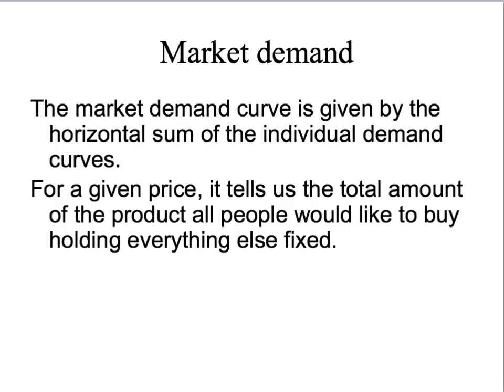Now the market demand curve is simply given by the horizontal sum of the individual demand curves. That may sound complex, but actually it is really, really simple. If you understand what the demand curve is for an individual, the market demand curve is just a very simple extension. The market demand curve tells us: for a given price, the total amount of the product that all people would like to buy, holding everything else fixed.